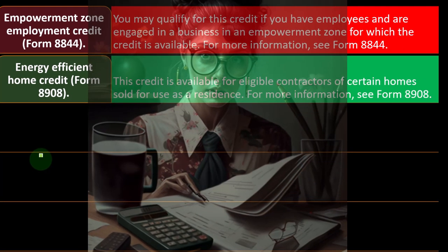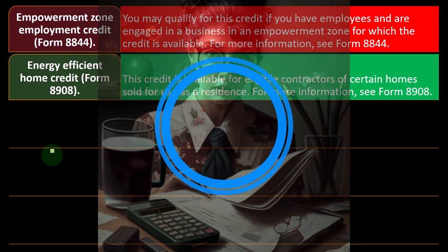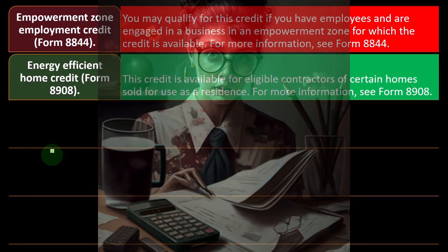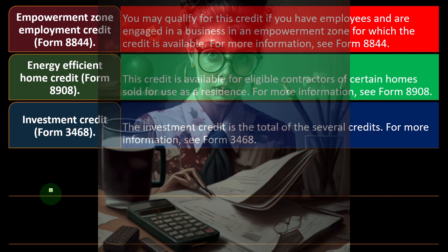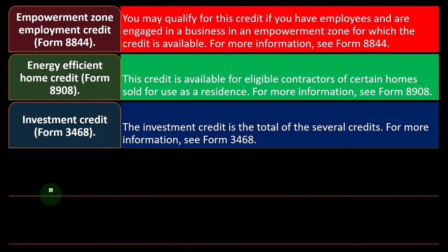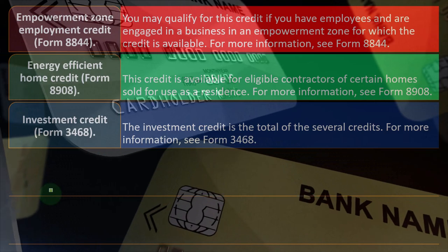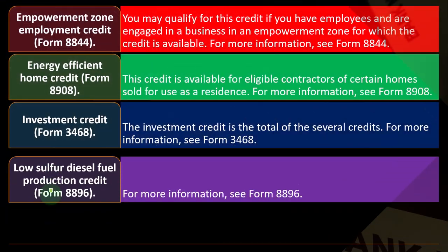The Energy Efficient Home Credit is on Form 8908, available for eligible contractors of certain homes sold for use as a residence. The Investment Credit is on Form 3468 — it is the total of several credits combined. For more information on either, check the respective forms on the IRS website.